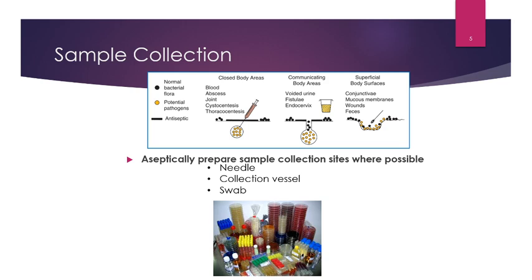For sample collection, the small black dots represent normal bacterial flora on our skin. Where we might put antiseptic is to kill the normal flora so it doesn't contaminate what we're trying to get. For a closed body area — like blood, an abscess, a joint, or a cystocentesis — we use antiseptic at that site, take a needle, go into the potential pathogen area, and draw the sample without aspirating on the way in or out. We're just getting the sample from inside that space.